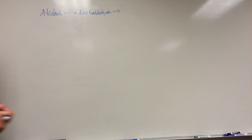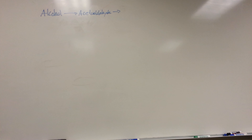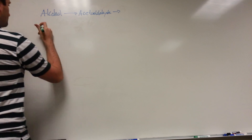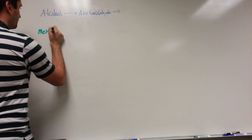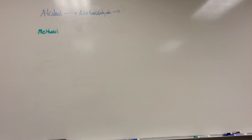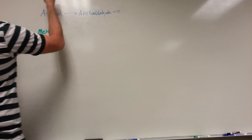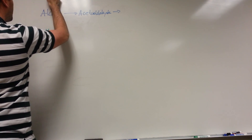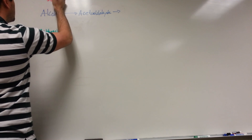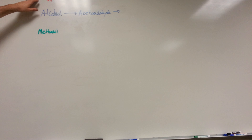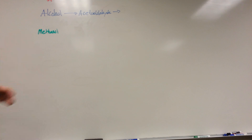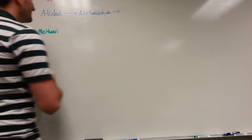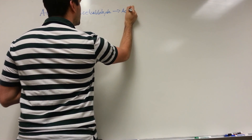Let's look at a broader picture now. We still have our backbone: alcohol broken down into acetaldehyde. But now we'll also look at methanol breakdown and ethylene glycol breakdown — like windshield wiper fluid. These are all related because they end in '-ol,' indicating they are all forms of alcohol.